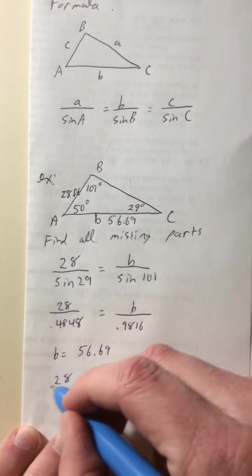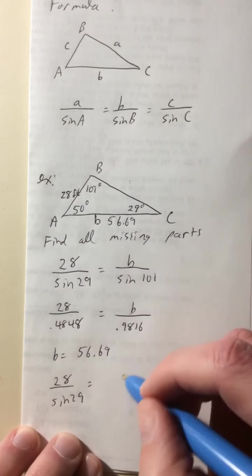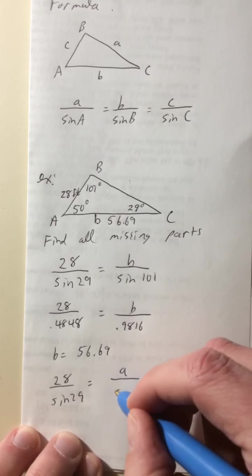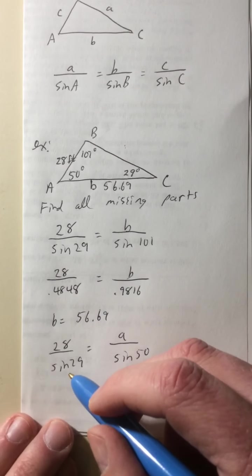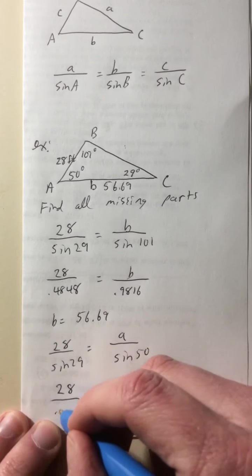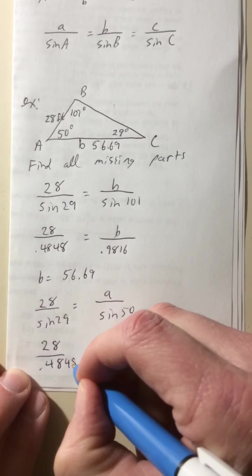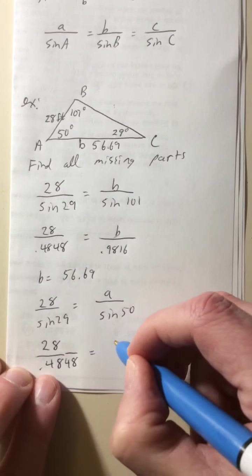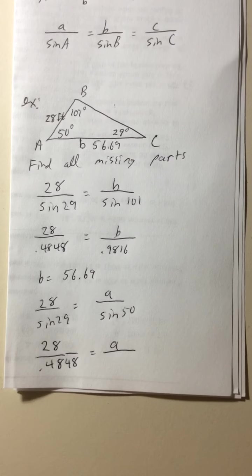So we're gonna do the same thing we just did. So we're gonna have 28 over sine of 29. So 28 over sine of 29 equals, in this case now we're gonna have a, which we don't know, over the sine of 50. Well, 28 over sine of 29, we already know that. So that's 28 over 0.4848 equals A over the sine of 50.